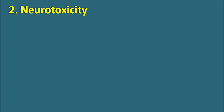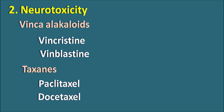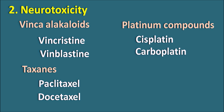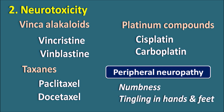Second is neurotoxicity. Vinca alkaloids like vincristine and vinblastine — natural alkaloids — along with semisynthetic derivatives like vindesine and vinorelbine, can all produce neurotoxicity. Similarly, other plant alkaloids like taxanes — paclitaxel and docetaxel — again produce neurotoxicity. Platinum compounds like cisplatin and carboplatin can also induce neurotoxicity. All these drugs produce peripheral neuropathy, observed as desensitization resulting in numbness, tingling in the hands and feet, and burning pain.